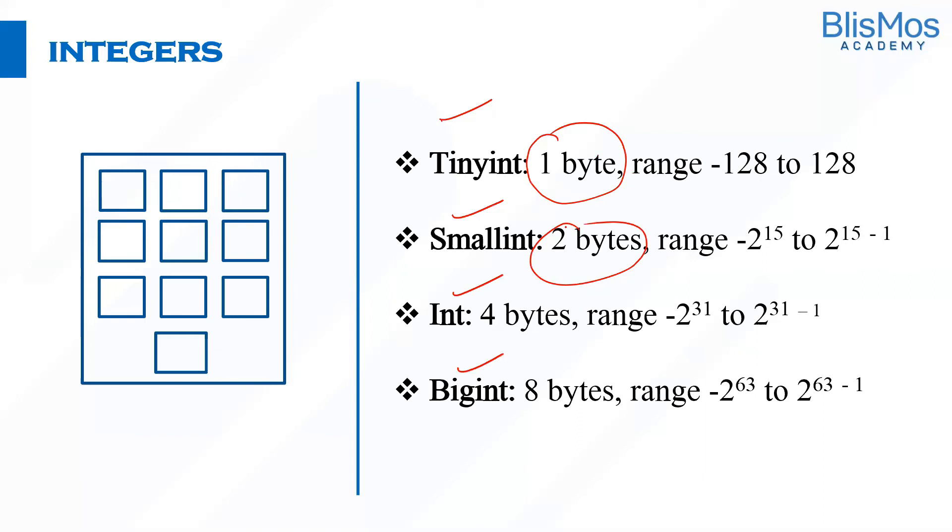Why do we need to classify within integers? Because whenever you define a data type, there is memory allocated to that. For example, in case of tinyint there'll be one byte allocation. In case of bigint there will be eight bytes allocation.